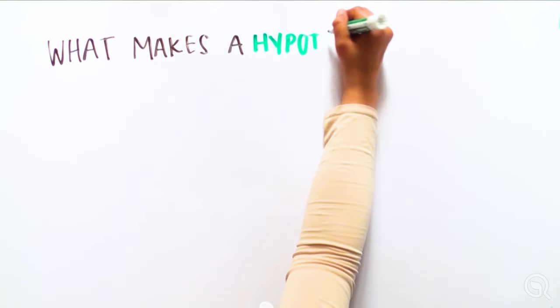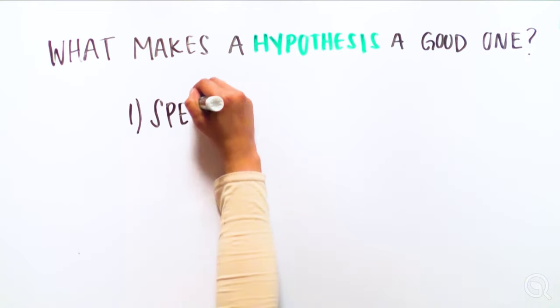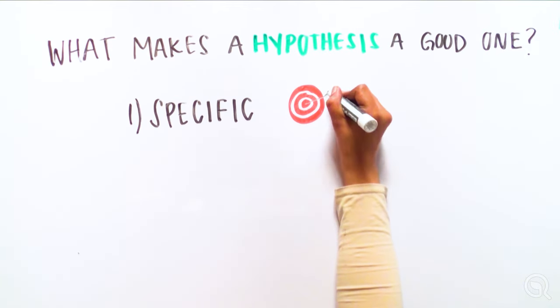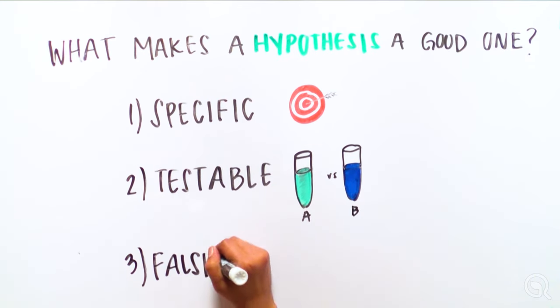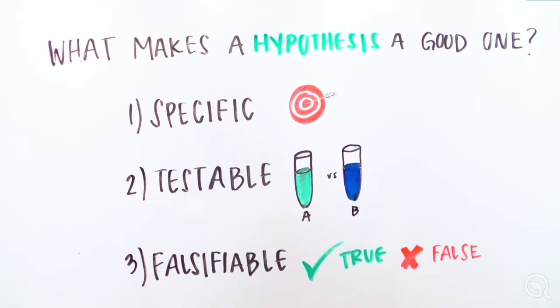So what makes a hypothesis a good one? It must meet the following conditions: one, be specific; two, be testable; and three, be falsifiable, or able to be proven false.